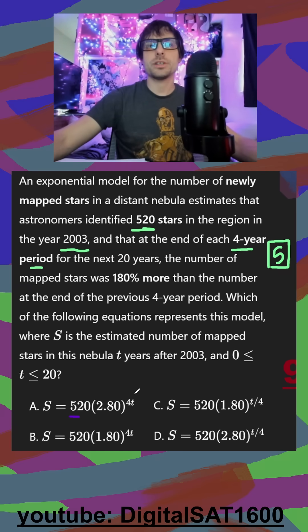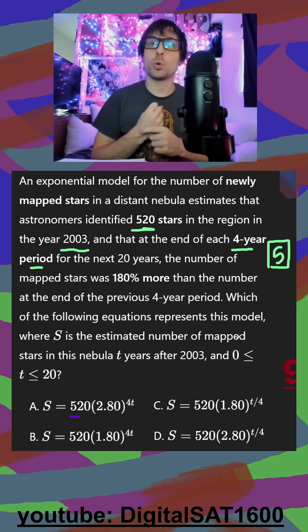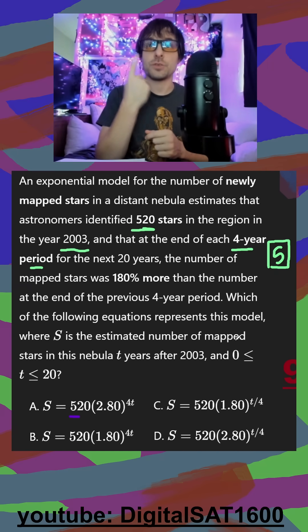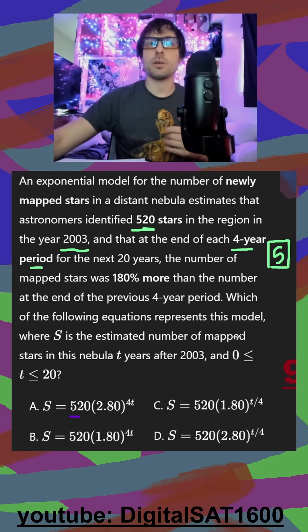So I'm looking at 4t versus t over 4. Remember, if it's happening every four years for 20 years - after 4, after 8, after 12, 16, 20 - that's where we got the 5 from.